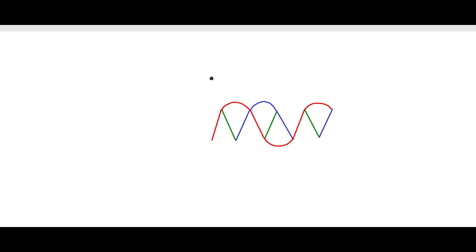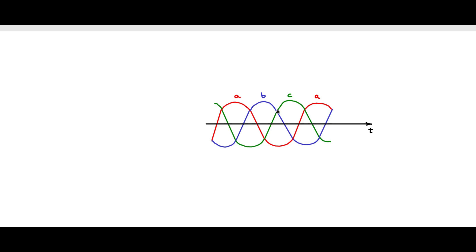Consider this three-phase waveform — a phase, b phase, c phase — each is individually a time wave shape. This can also be represented in spatial coordinates. You can have three planes: a phase in the horizontal plane, b phase at 120 degrees, and c phase at 240 degrees from the a plane. So I have three axes — a axis, b axis, and c axis — distributed spatially 120 degrees apart.